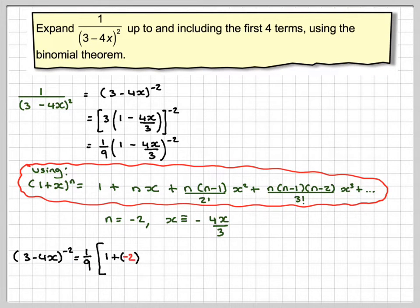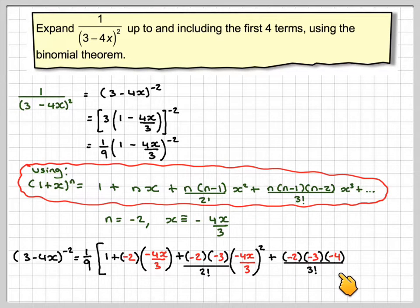1 plus (-2) times my value of x which is -4x/3, plus (-2)(-3)/2! times (-4x/3)², plus (-2)(-3)(-1)/3! times (-4x/3)³.